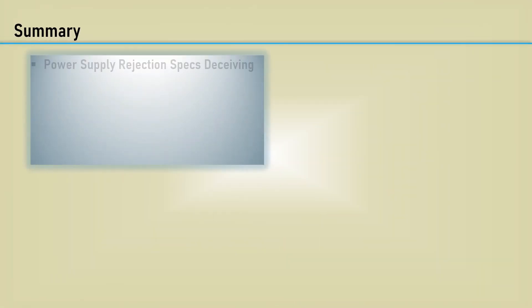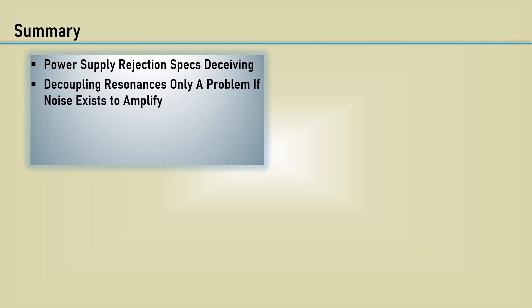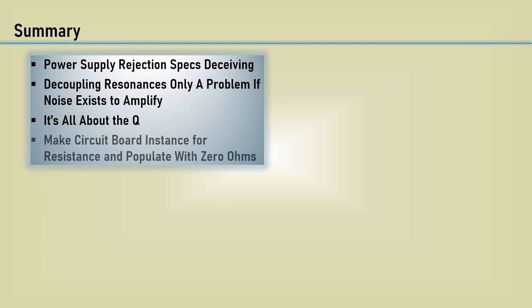In summary: power supply rejection specs are deceiving — they are great at DC, but not so good at higher frequencies. Keep in mind that decoupling resonances are really only a problem if noise in the power line exists to amplify. Noise may be very low in your test environment, but your circuits could be susceptible to radiated fields in other environments. It's all about the Q of the circuit; L and C values just tune the resonance. Always leave a spot for series resistance — you can always populate it with 0 ohm resistors if you don't need it.